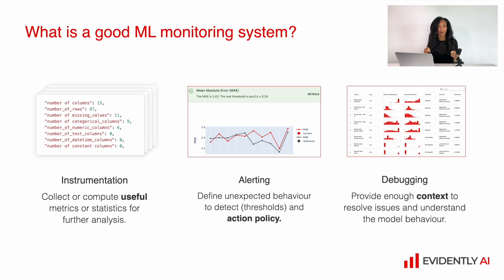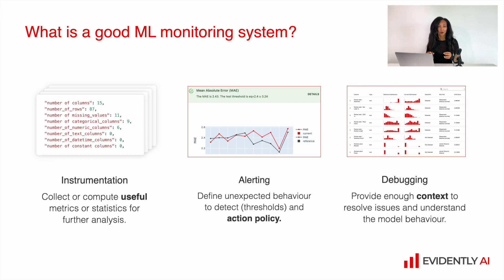The second part is alerting. We need to define what is the unexpected behavior of our service and how to detect it — what are the metrics, what are the thresholds, and when we need to send an alert to an engineer. How many issues should happen in a fixed period of time before we send an actual alert to the engineer, and what is the alerting policy.